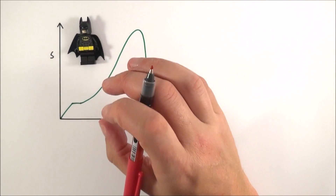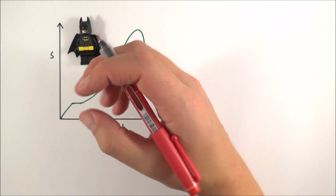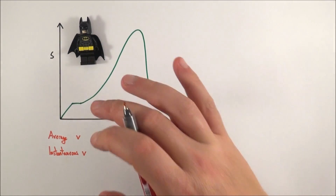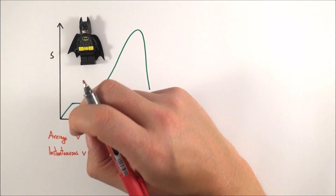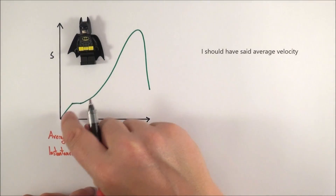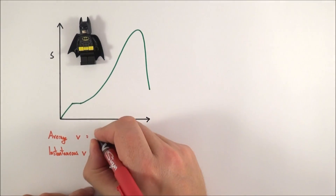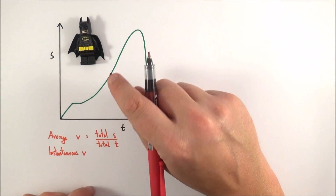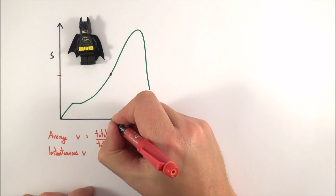We can use this graph to look at both the instantaneous and the average velocity. The same applies to a distance-time graph when looking at average speed and instantaneous speed, but I'm going to use velocity for this example. The average velocity is equal to the total displacement over the total time taken. So at this point in the journey, to find their average velocity, we look at total displacement s and total time t.